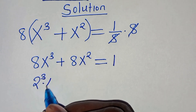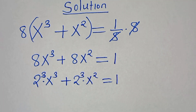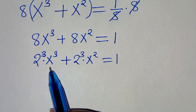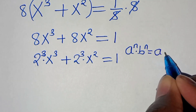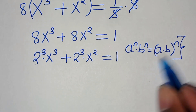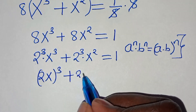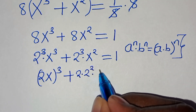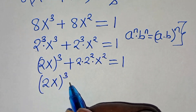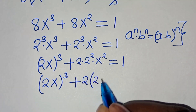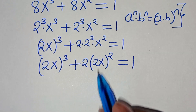We can express 8 as 2 to the power of 3, multiplied by x to the power of 3, plus 2 to the power of 3 times x to the power of 2, equals 1. Using the property a^n · b^n = (ab)^n, this becomes (2x)^3. Also, 2^3 can be written as 2 · 2², so 2x is common throughout.